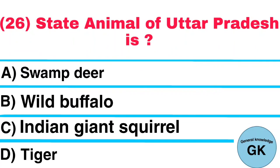Question Number 26. State Animal of Uttar Pradesh is: A. Swamp Deer, B. Wild Buffalo, C. Indian Giant Squirrel, D. Tiger. Answer: Swamp Deer.